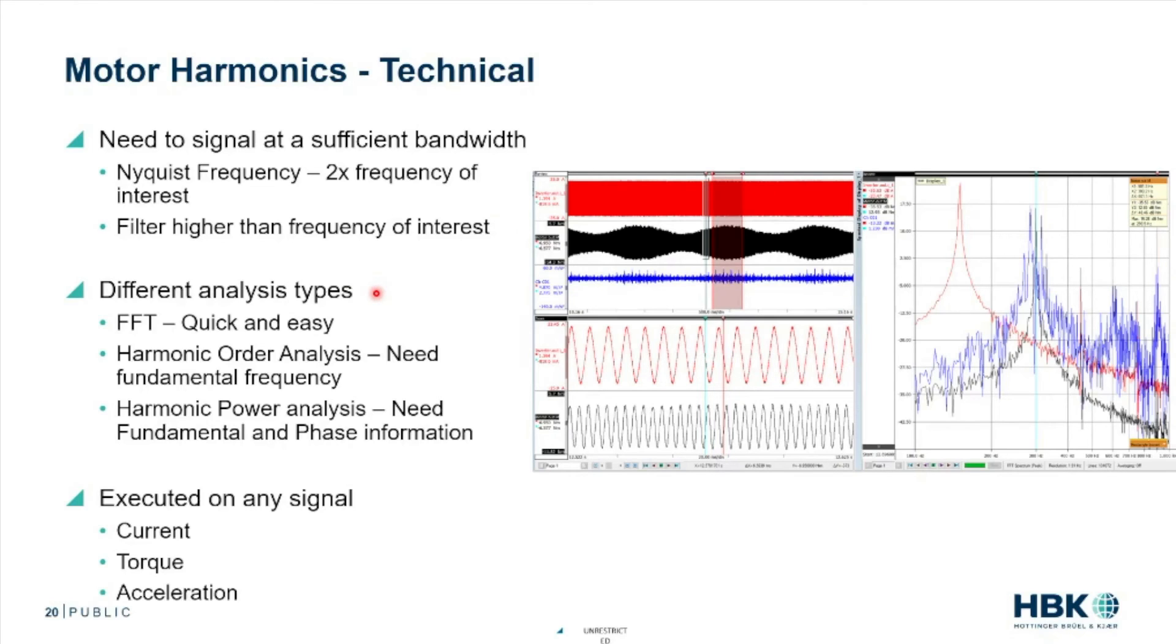We have a variety of different analysis types we can do. All of them do rely off of kind of the Fourier analysis. But we have the FFT, which is featured here. It's really quick and easy. But it might not give us, it might actually give us too much information typically. We could do a harmonic order analysis where we do it based off the speed of the machine. But in this case, we need to know about the fundamental frequency. And I'll touch on each of these a little bit more.